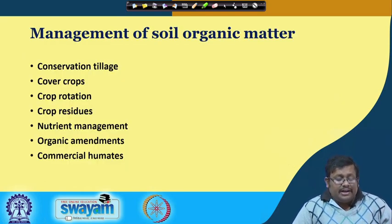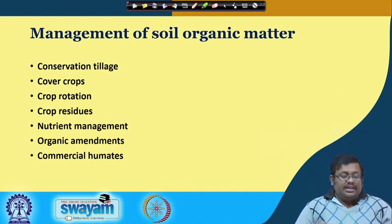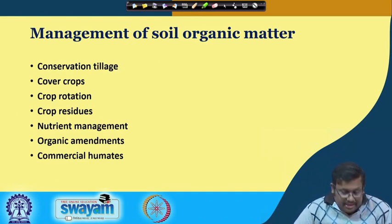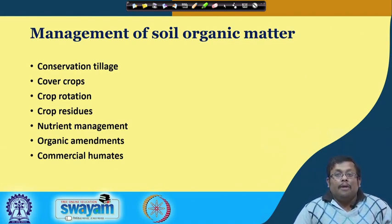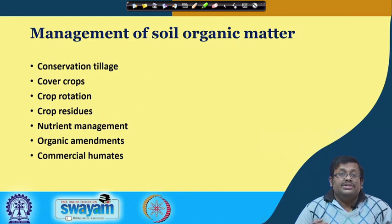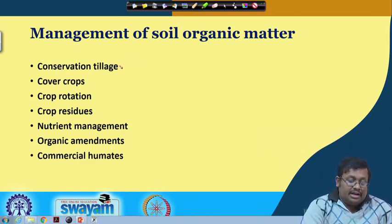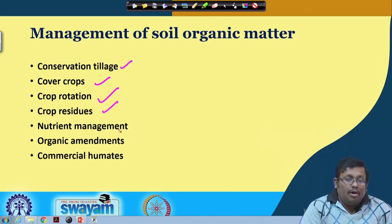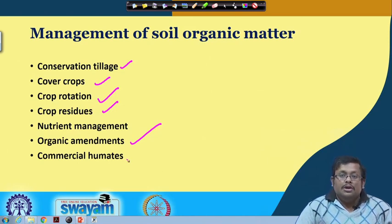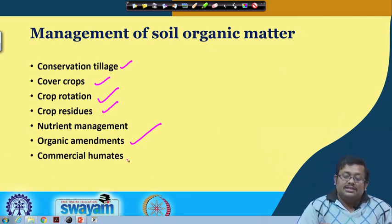How do we manage soil organic matter? There are several strategies: conservation tillage, providing cover crops, crop rotation, applying crop residues, nutrient management, organic amendments, and commercial humates. Conservation tillage helps maintain soil organic carbon by less disturbing the soil. Cover crops, crop rotation, and crop residues all add organic matter to the soil. Applying different types of bulky and concentrated organic manure also adds to soil organic matter.